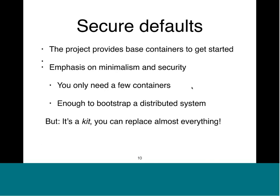One very important aspect to us is security. When we design the system, we want to have good security defaults. The way we build the system is around base containers which we emphasize to be minimal and secure. To build a Linux VM for something like Docker for Mac or AWS, you only really need to run a few containers to provide services and run Docker — the minimum to bootstrap a distributed system. It's really just a kit, but you can replace any of these components.